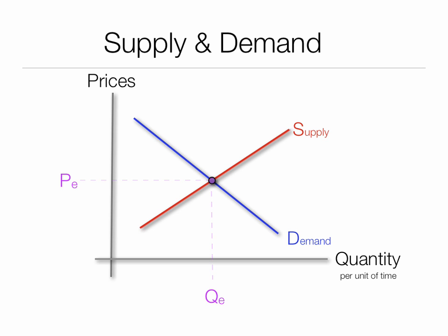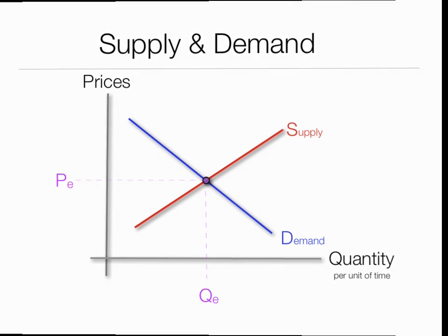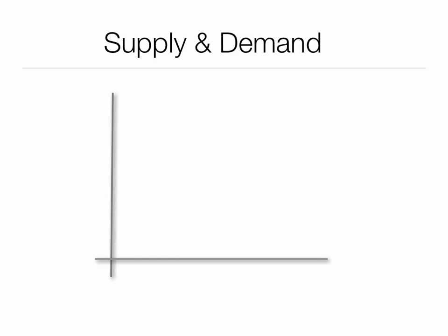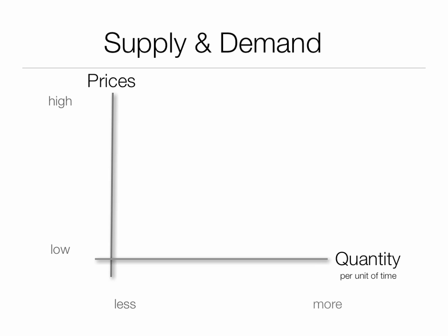Let me build this for you. Economists use a standard Cartesian plot, which means we have y on the vertical axis and x on the horizontal axis. We put prices on the y-axis, going from low to high. Quantity per unit of time is on the horizontal axis, from less quantity to more quantity.